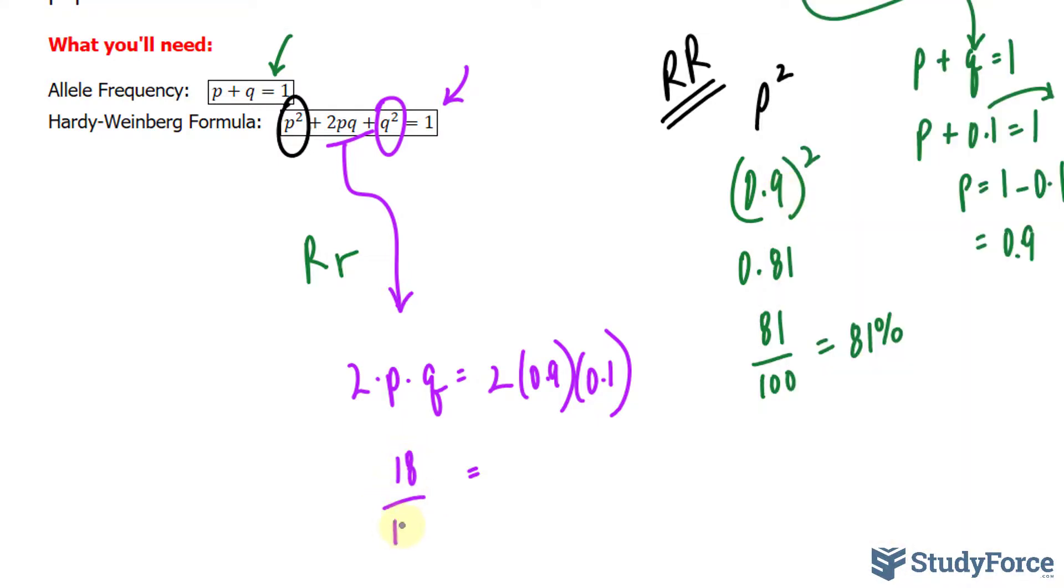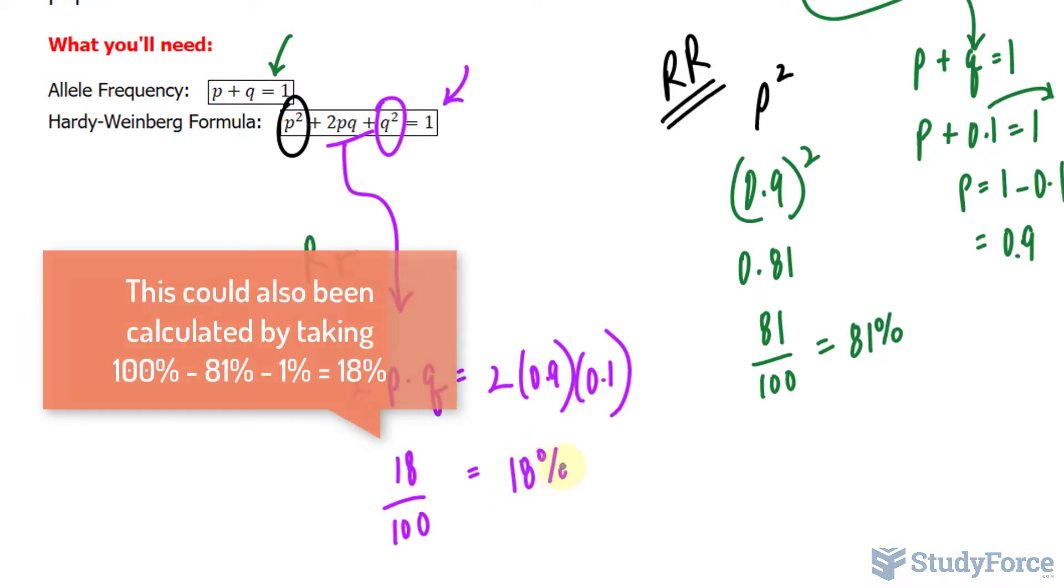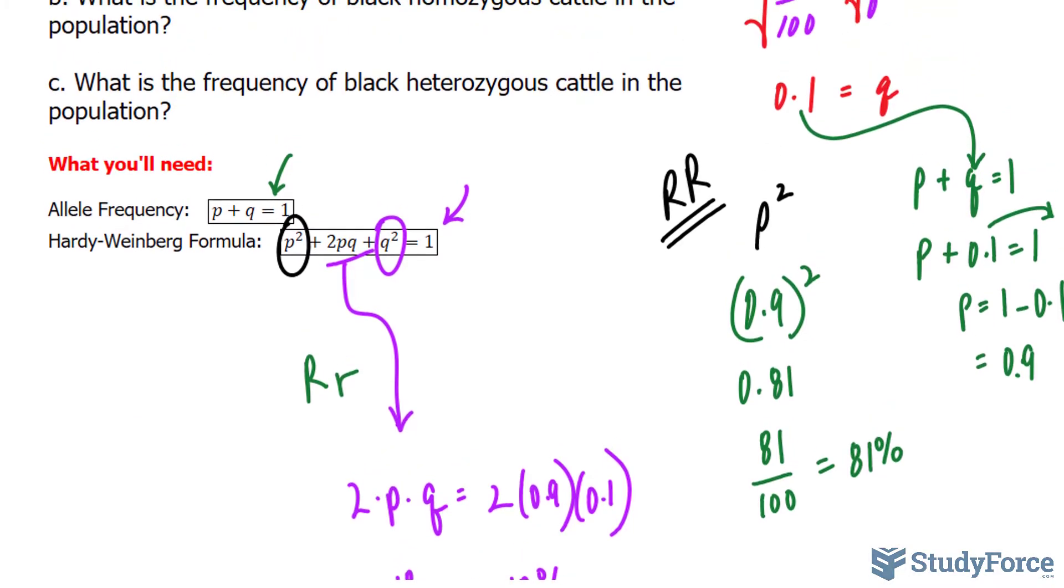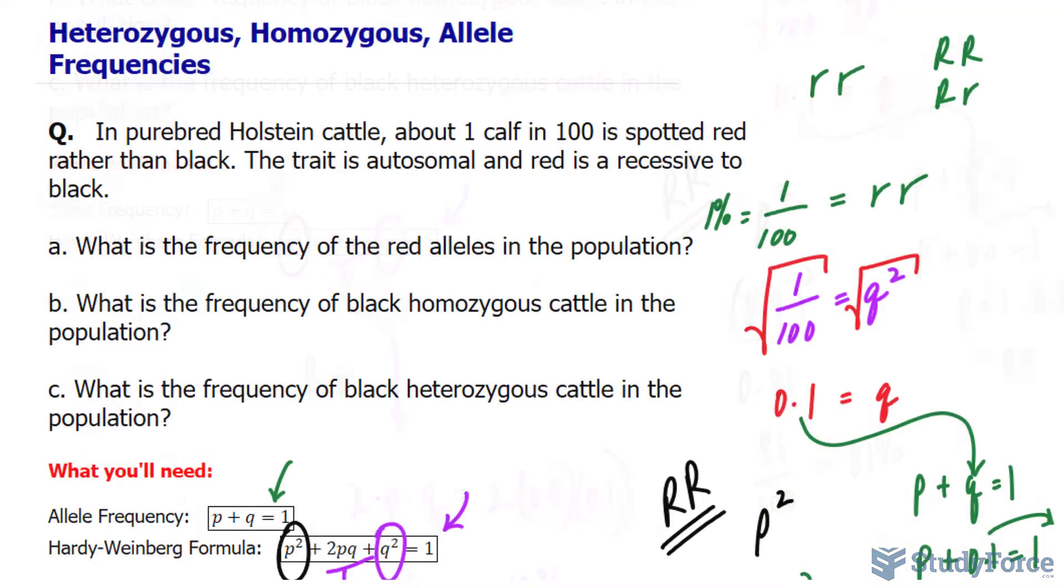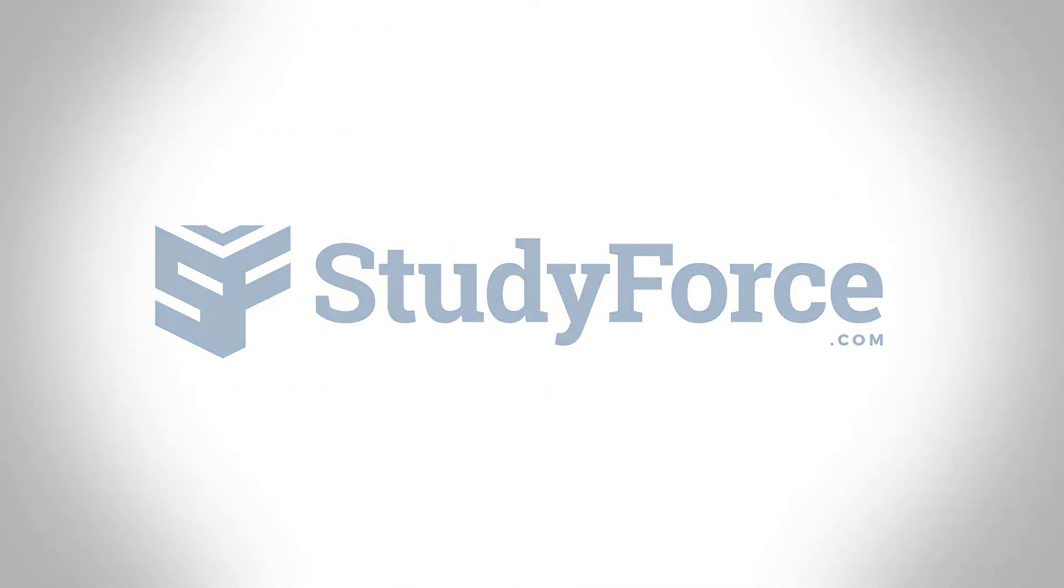So 18% are carriers and they have the genetic inheritance of capital R, little r. And there you have it. That is how to calculate heterozygous and homozygous allele frequencies.